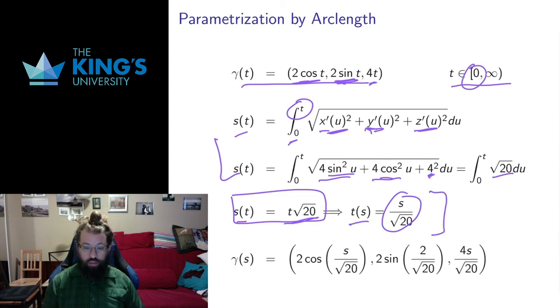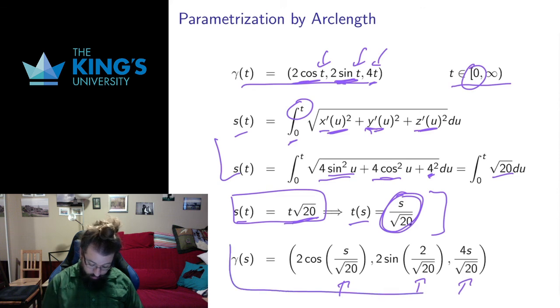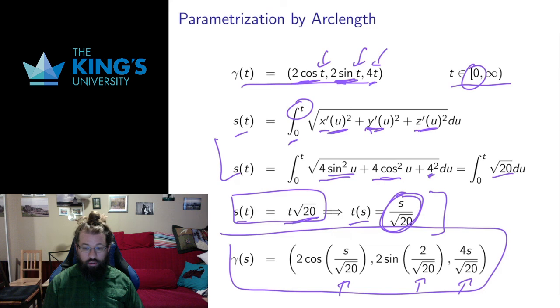That's my three-step process. I find the arc length function. I calculate its inverse. And then I replace the t in the original curve with this expression s over root 20. I get this, I get this, I get this. And this is exactly the same helix, but the parameter is now the distance along the helix. So I put in s equals three, I will get a point exactly three units along the helix. I'll put in s equals 10, I'll get the point exactly 10 units along the helix. That's what the parameterization by arc length does. And that finishes this example and this video.